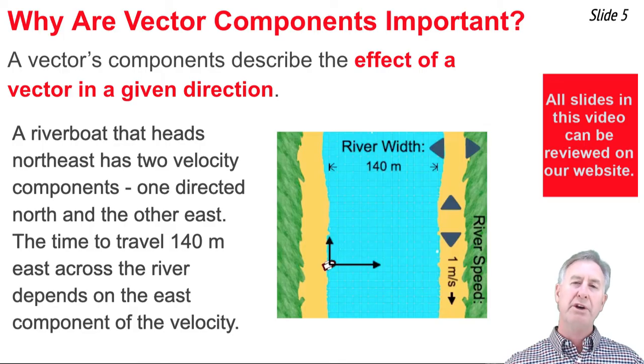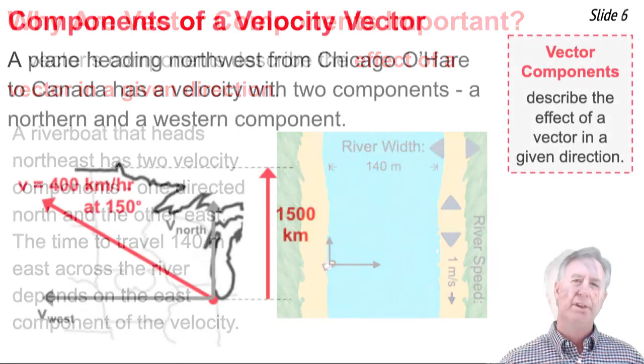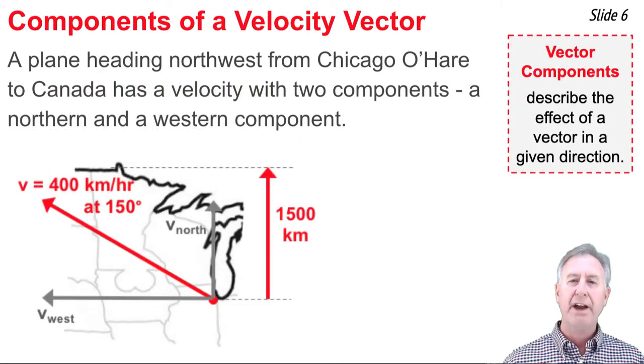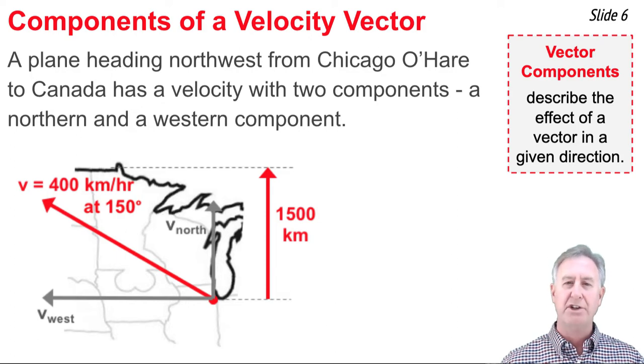The northern component, on the other hand, affects how far up the river the boat might travel in this same amount of time. Vector components describe the effect of a vector in a given direction.